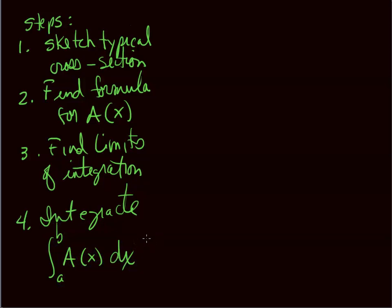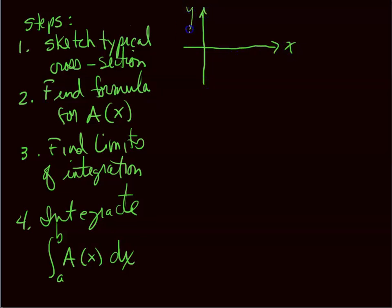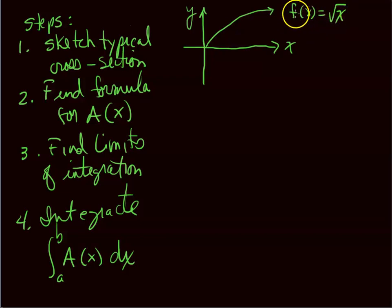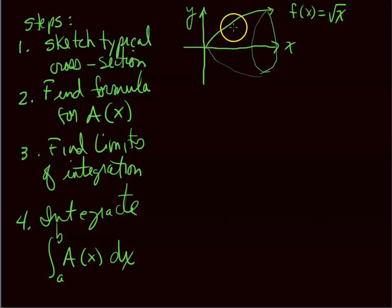For an example, suppose f(x) = √x. If we spin this around the x-axis, we get sort of a cone — not quite a cone, it has a curve to it. So you can't just use the volume of a cone equation.